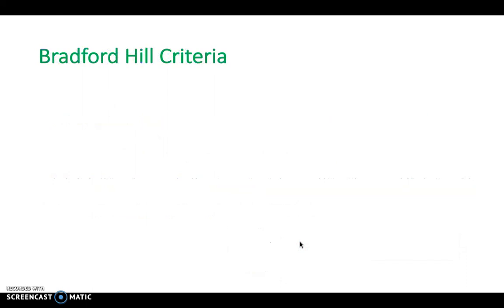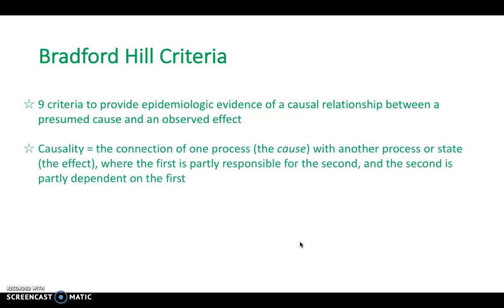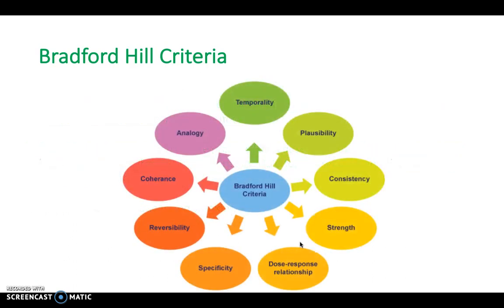The Bradford-Hill criteria is a concept to explore. These are nine criteria which were created in order to allow a causal relationship between a presumed cause and an observed effect to be measured. Causality is the connection of one process — the cause — with another process or state — the effect — where the first is partly responsible for the second and the second is partly dependent on the first. So you want your cause to be responsible for your effect and your effect to be dependent on the cause. For example, lung cancer and smoking. These are the nine Bradford-Hill criteria — let's explore them in a little bit more detail.